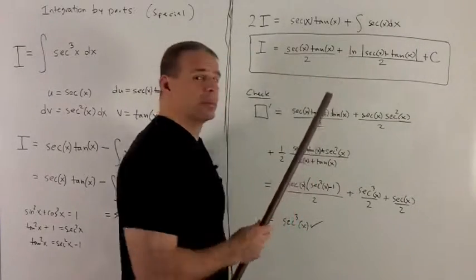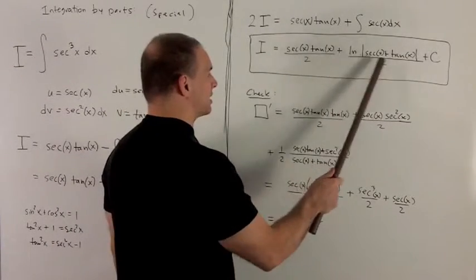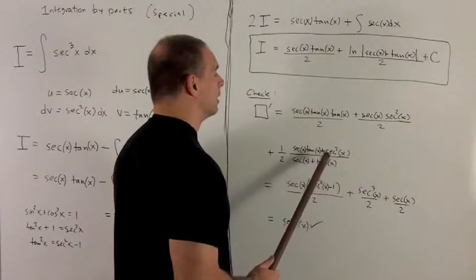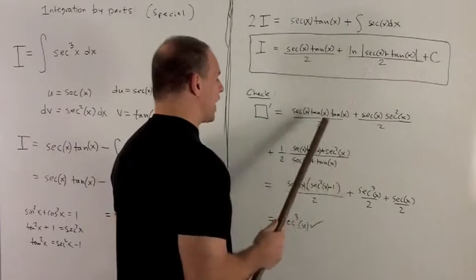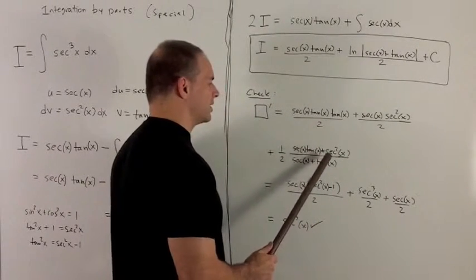I go over to the natural log. Rule for natural log absolute value is take the inside, put it in the bottom. Then I'm going to take the derivative of the inside for the top. The derivative of the secant is secant tan. The derivative of tan is secant squared.